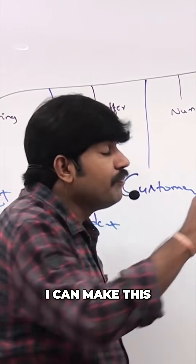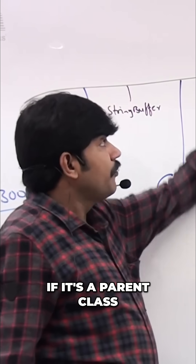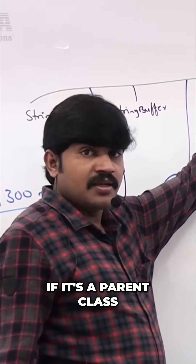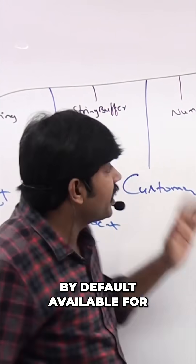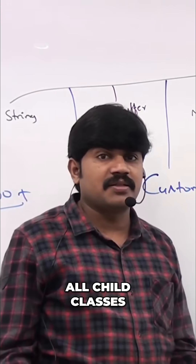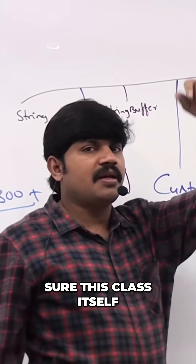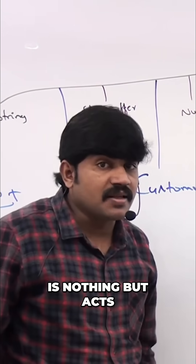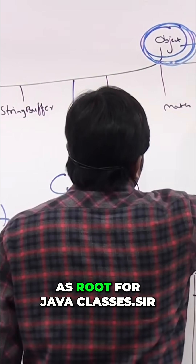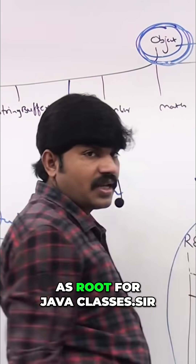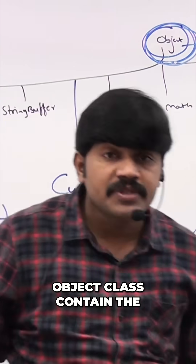If we make this class the parent class, then automatically the parent class methods will be available for all child classes by default. That is why Object class is the root for all Java classes. Object class contains the most commonly required methods for all Java objects.